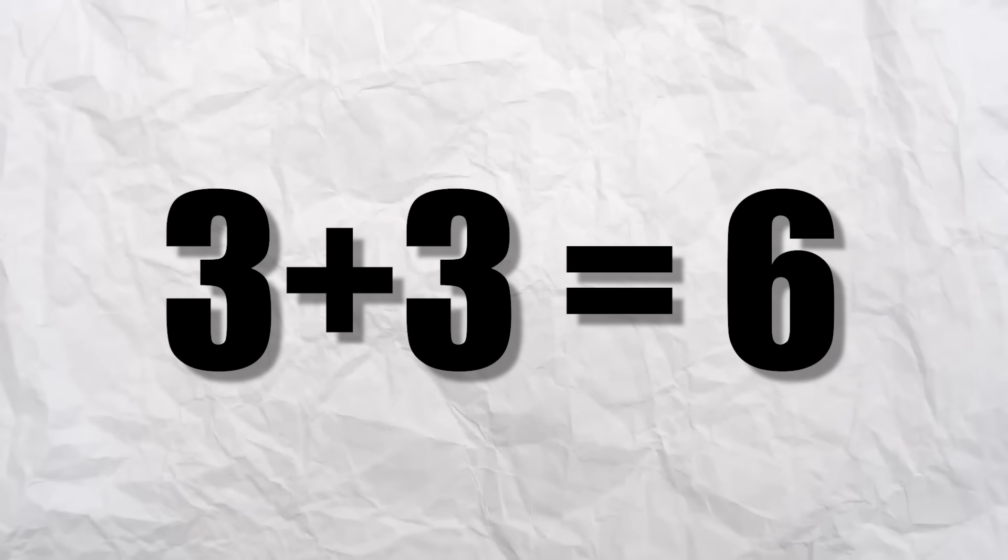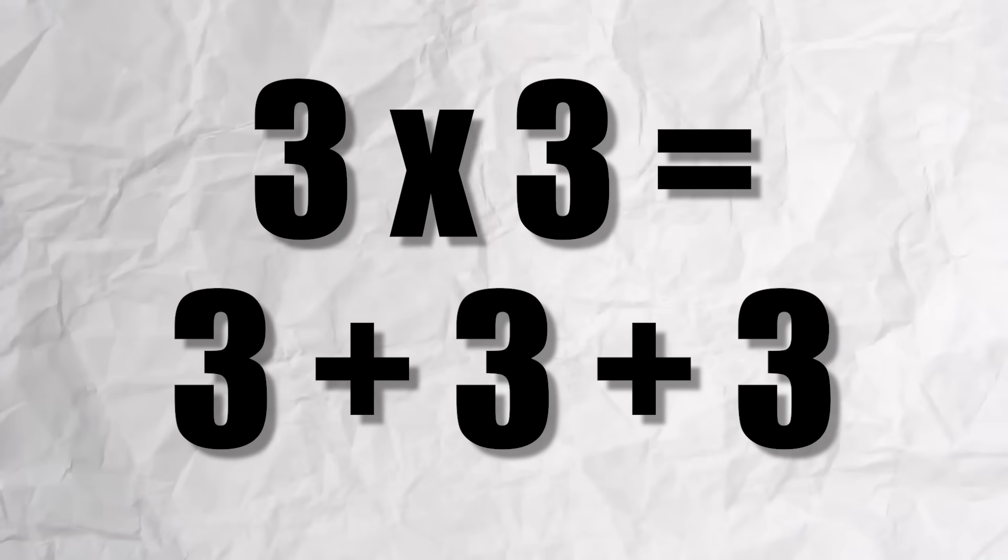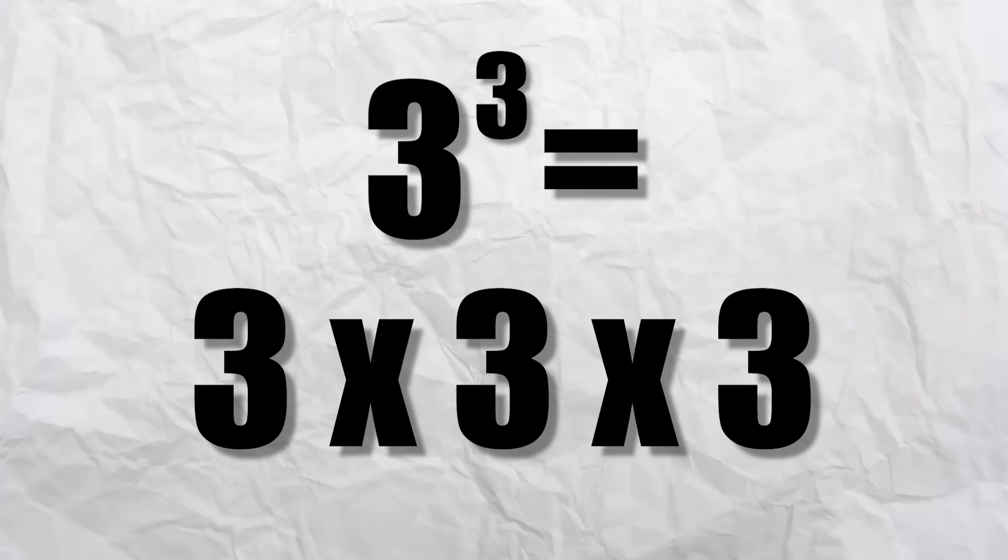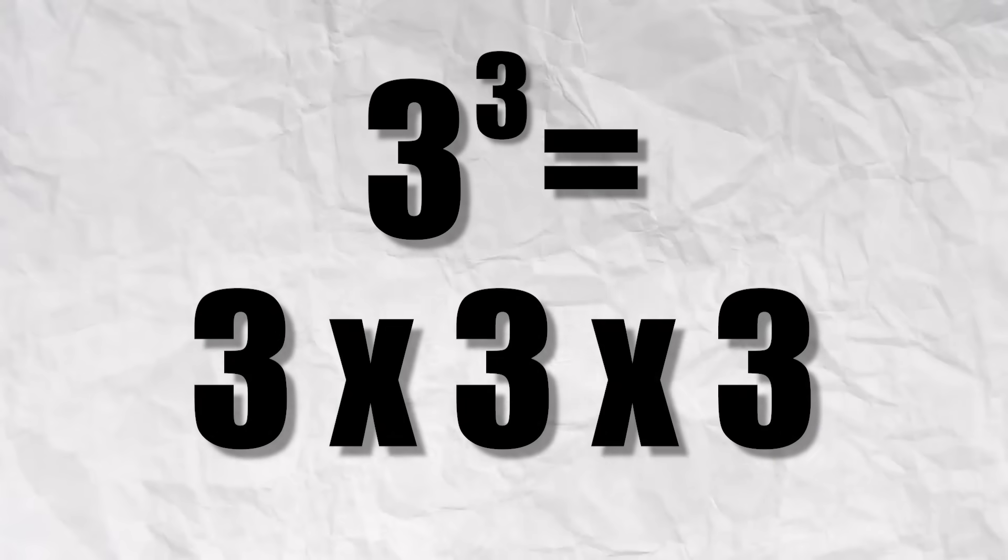We all know 3 plus 3 is 6, 3 times 3 is 3 plus 3, 3 times, and 3 to the power of 3 is 3 times 3, 3 times. But another way we can write this is 3 arrow 3.